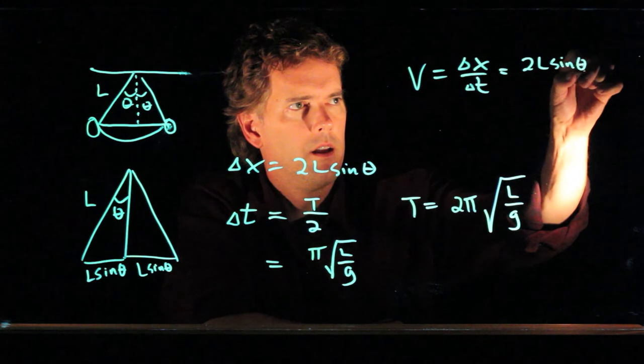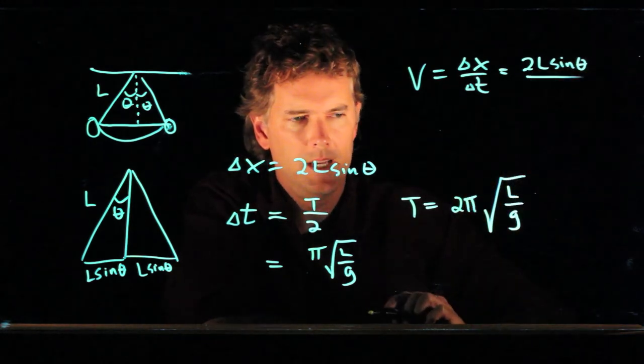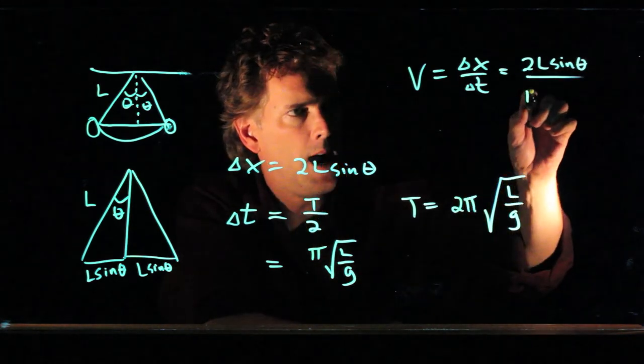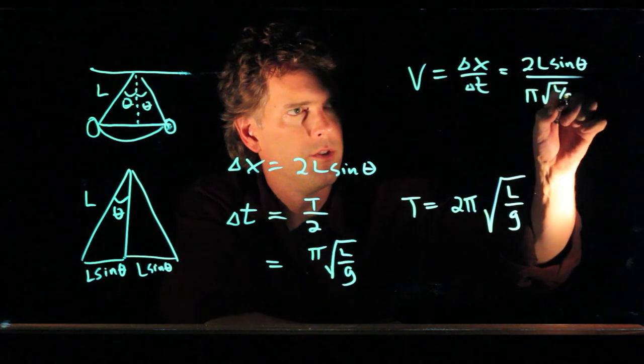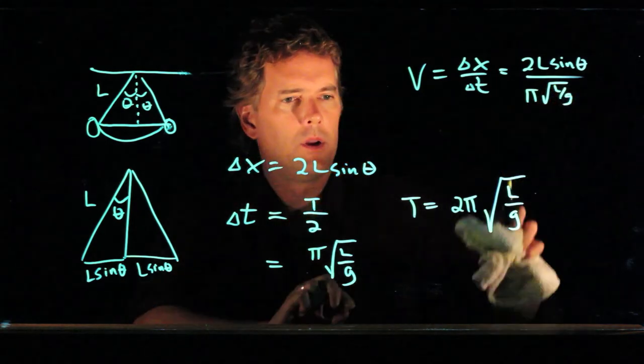2L sine theta divided by delta t, which we just said was pi square root L over G. And now we can plug in some numbers.